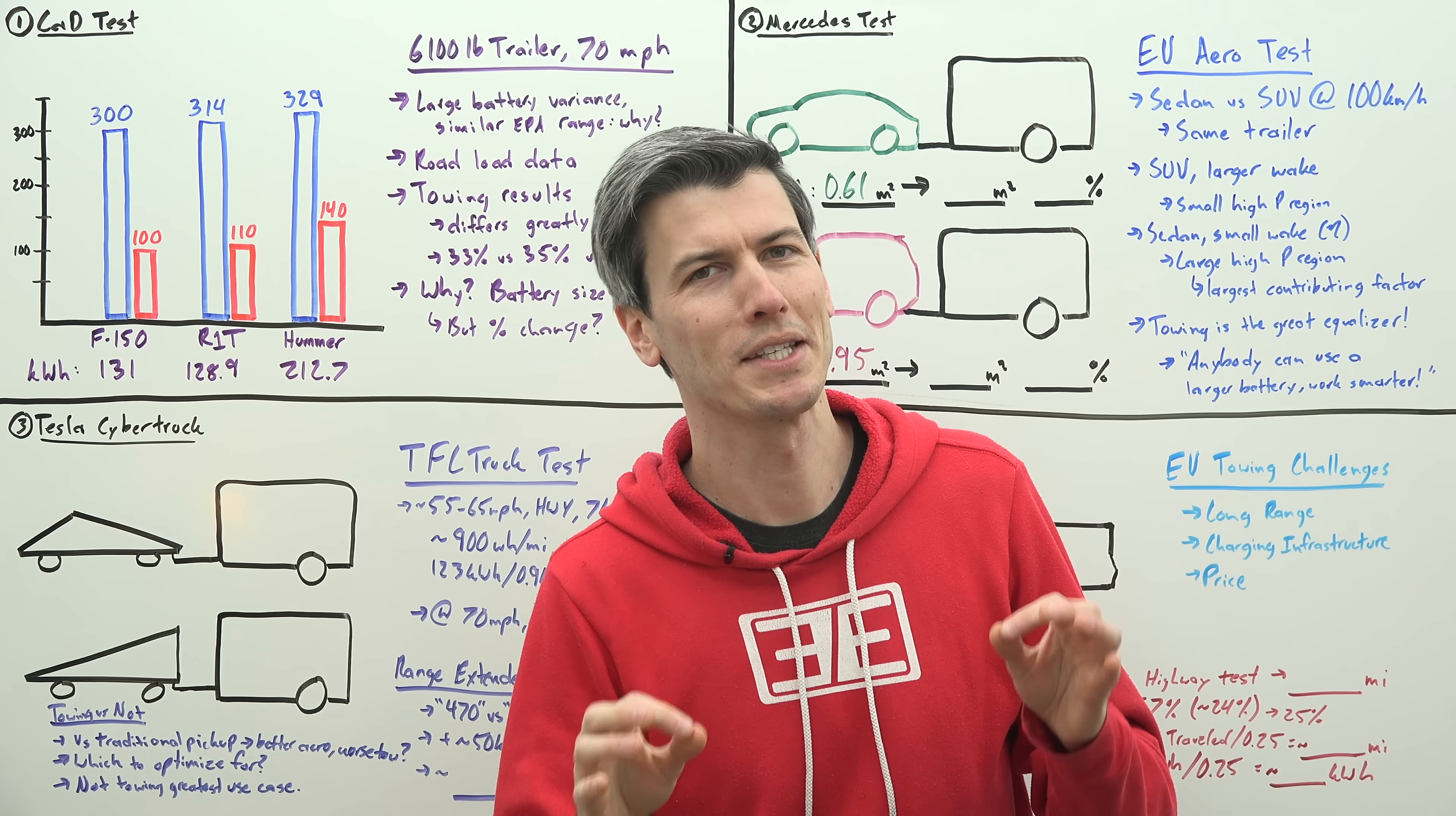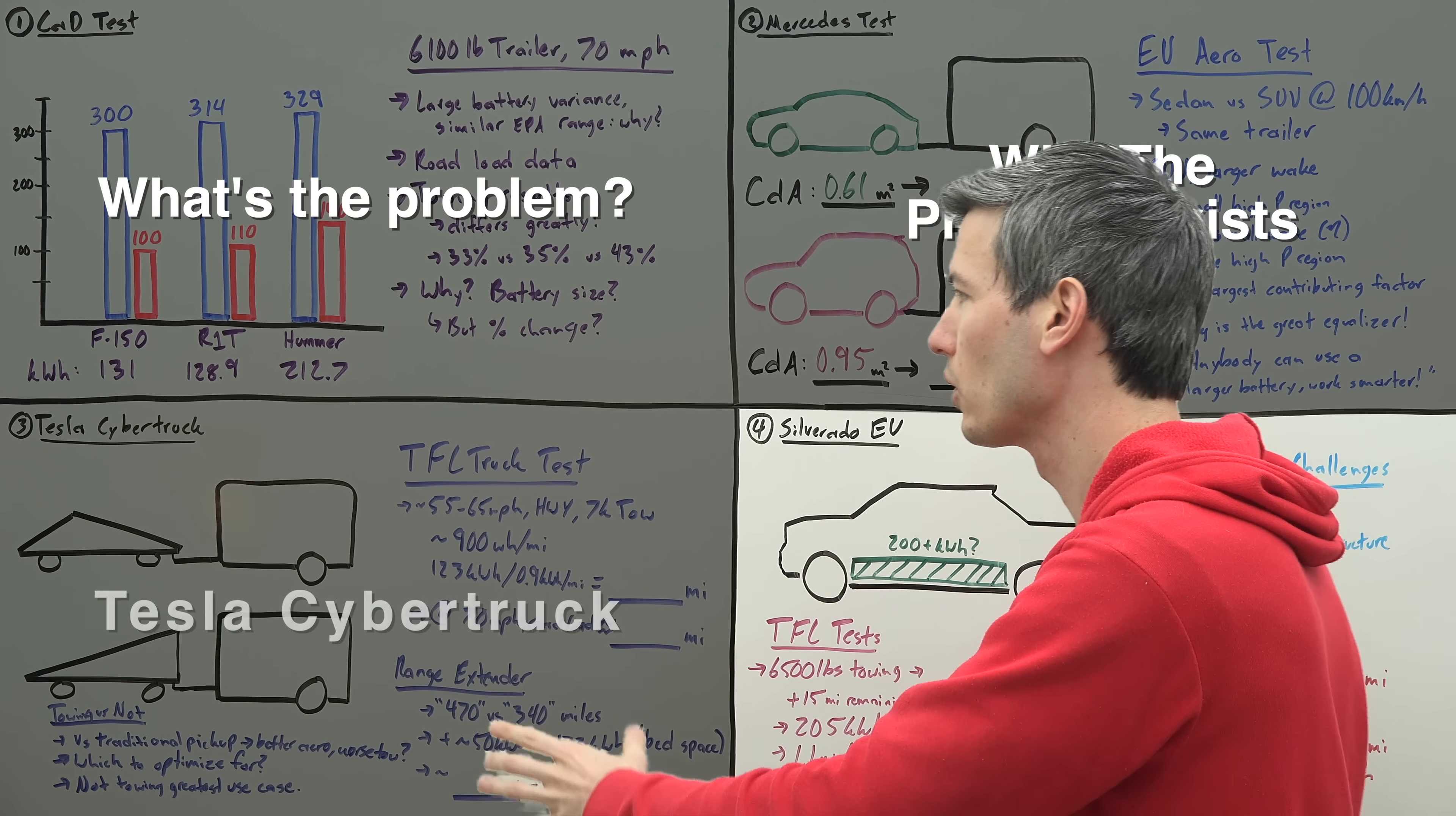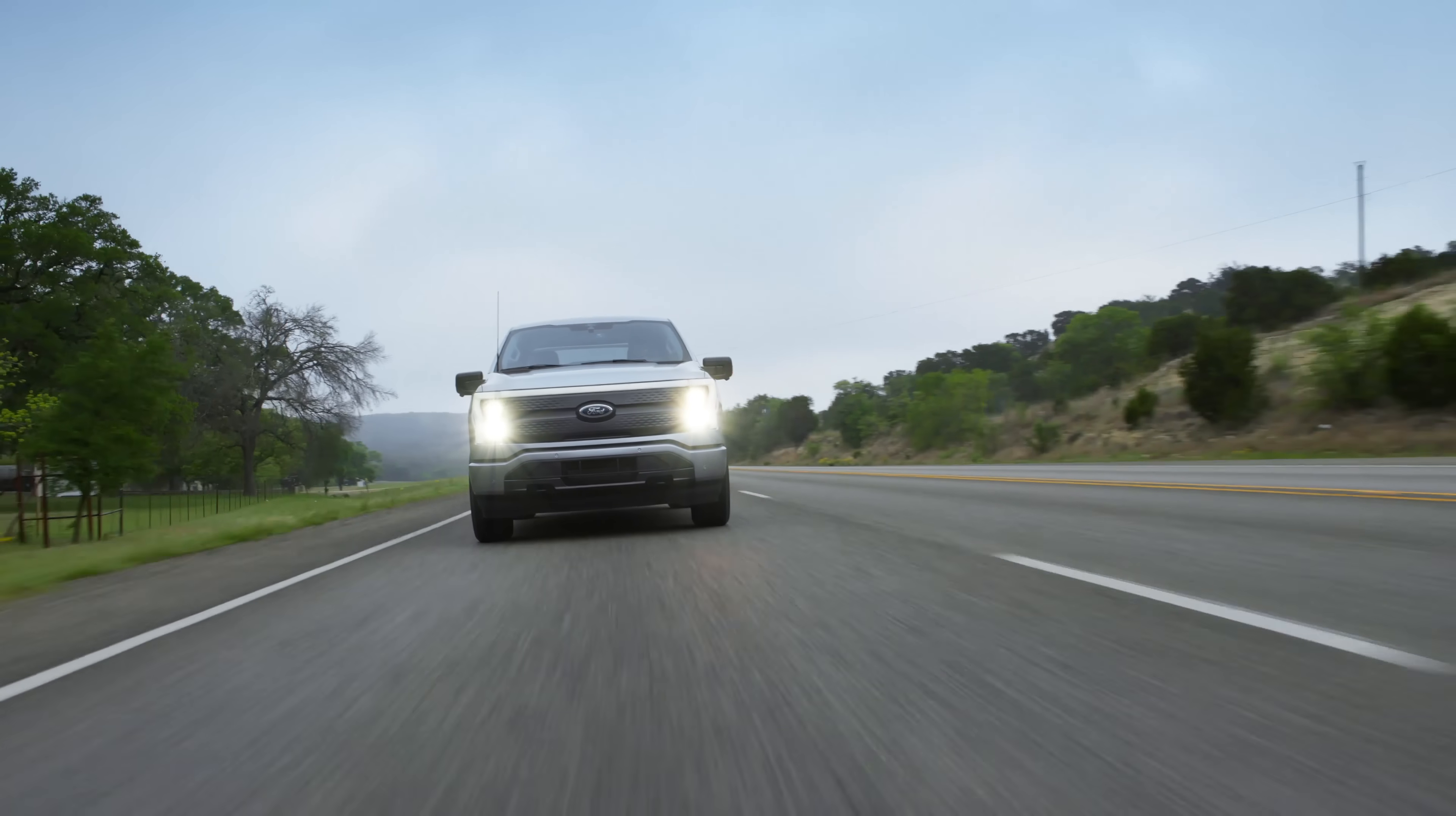So we're going to split this up into four sections. First of all, Car and Driver has a really cool test that demonstrates what the problem is. Mercedes then has a really cool test that explains why the problem exists. And then we're going to look at the Tesla Cybertruck, as well as the Chevy Silverado EV, in terms of long range towing.